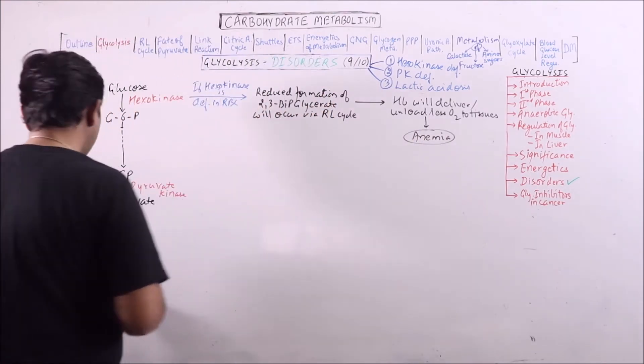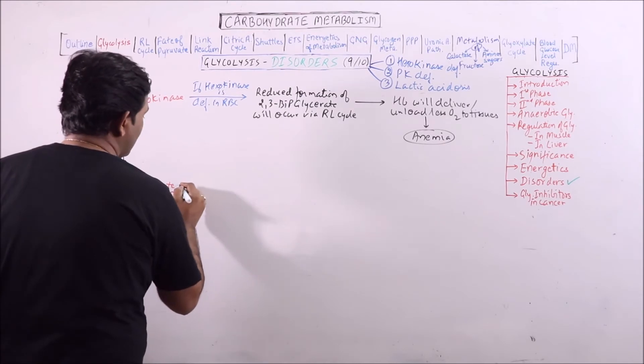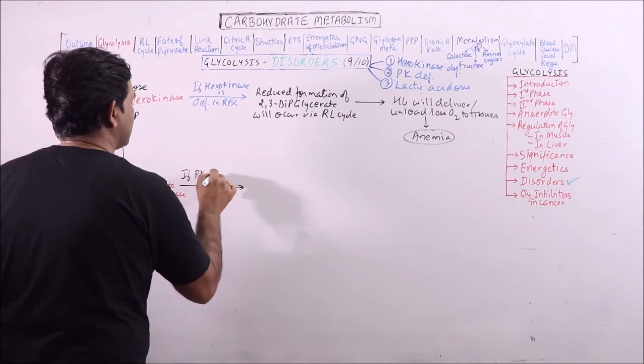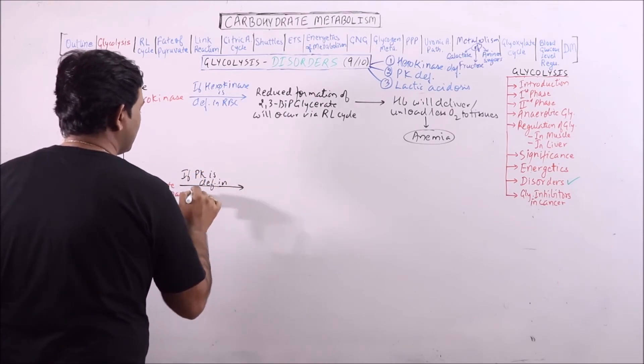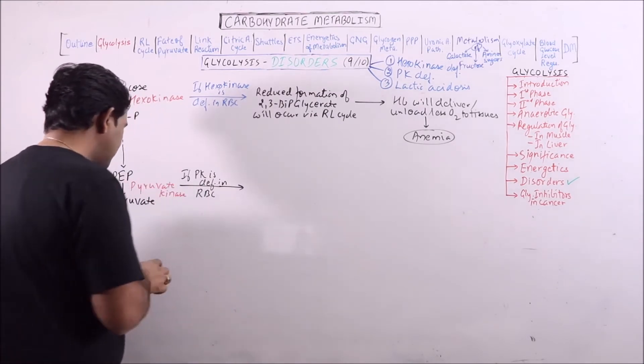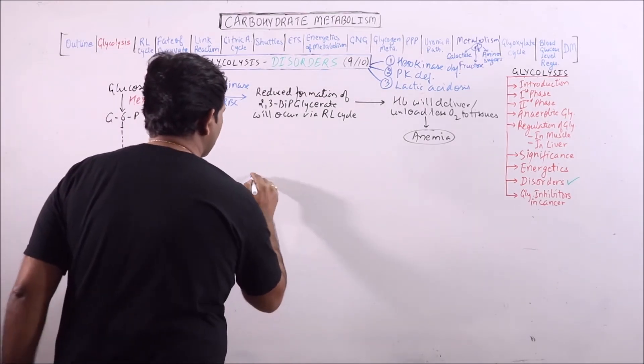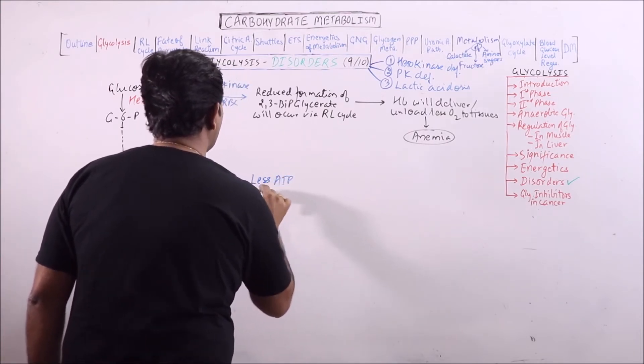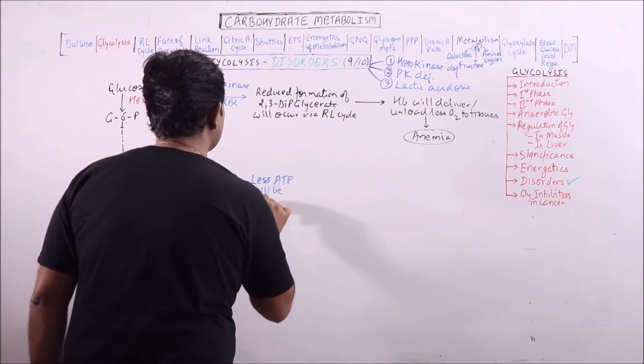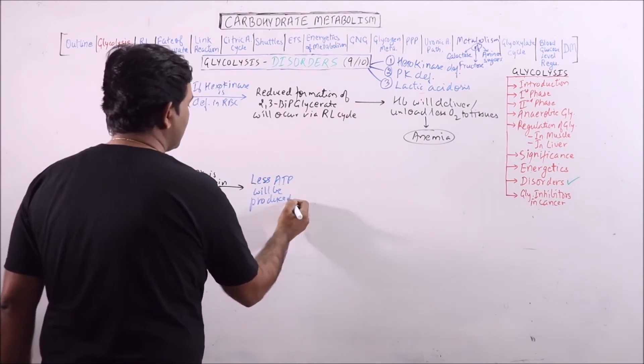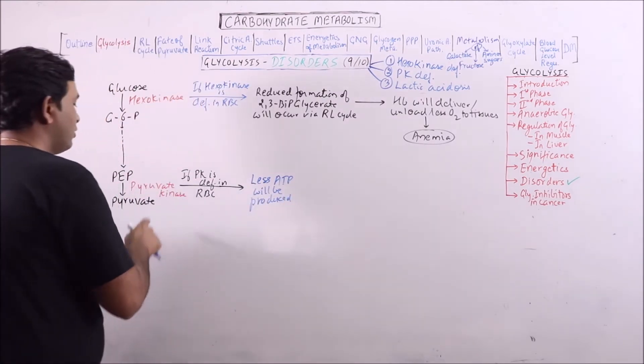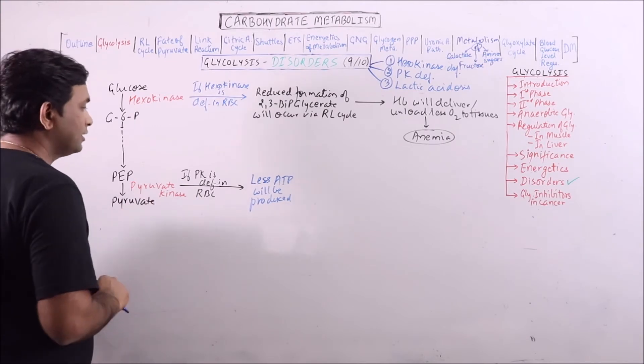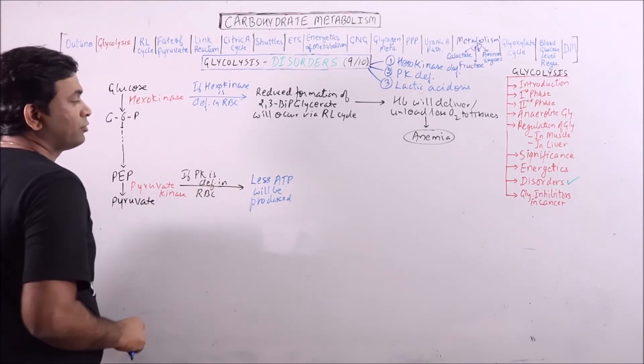What will happen if pyruvate kinase is deficient? If pyruvate kinase is deficient, less ATP will be produced. The reason is when pyruvate kinase is not formed, the last step which involves production of ATP will not occur, and that will reduce ATP production.